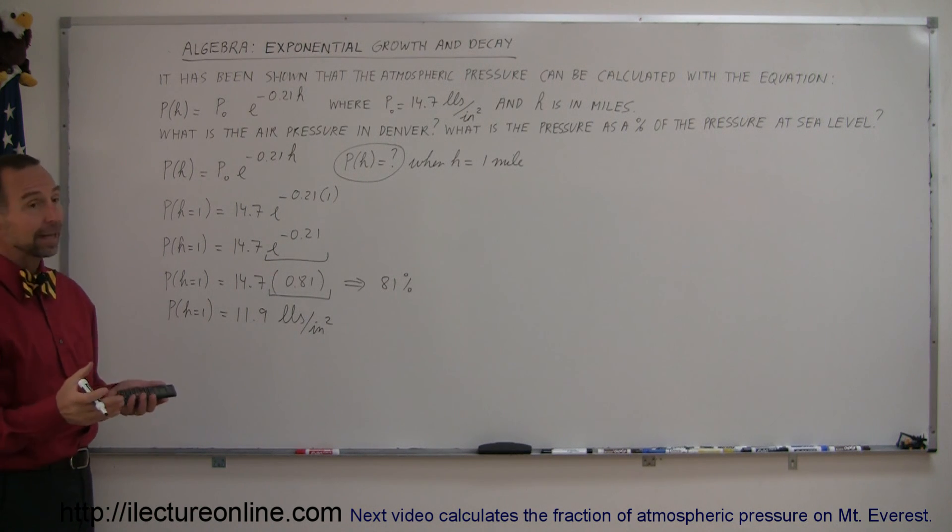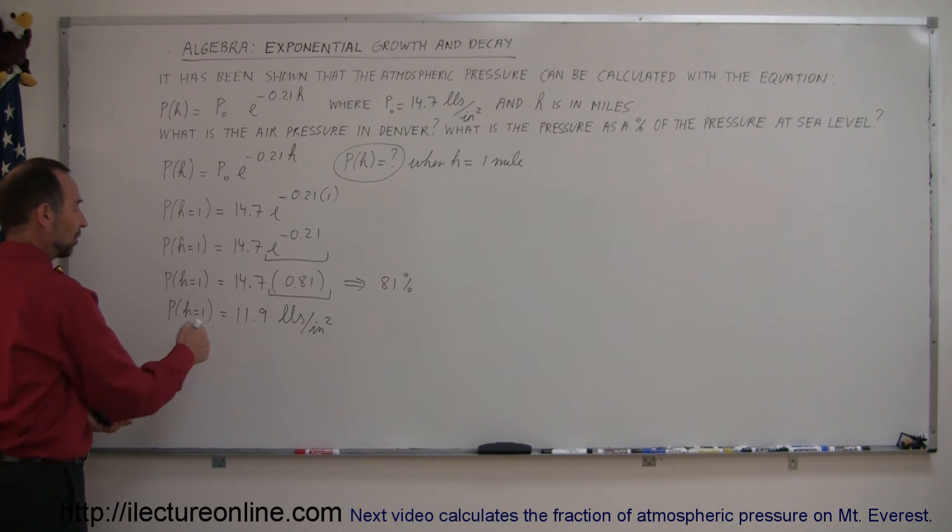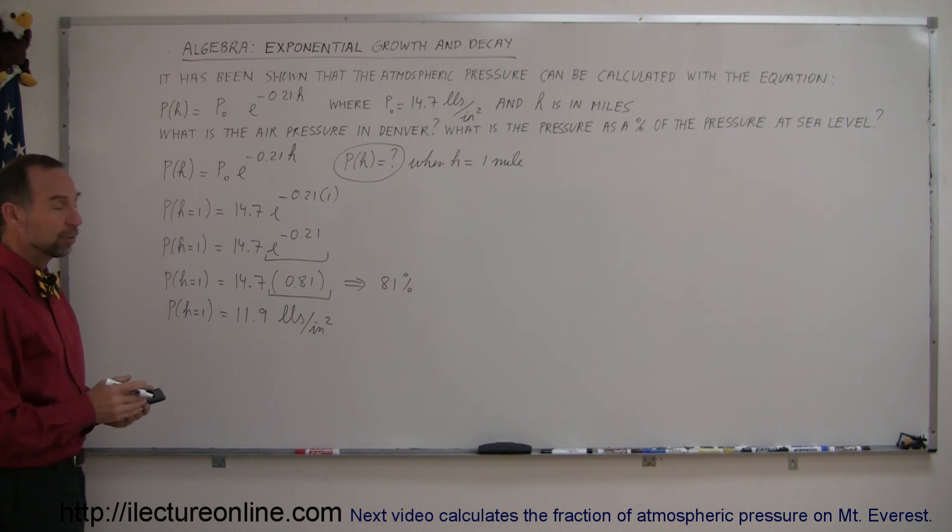And another way of looking at it, what is the percent reduction? Well, since we started at 100 percent, 14.7 pounds, went down to 81 percent which is 11.9 pounds per square inch, that's a reduction of 19 percent of the atmospheric pressure in Denver.